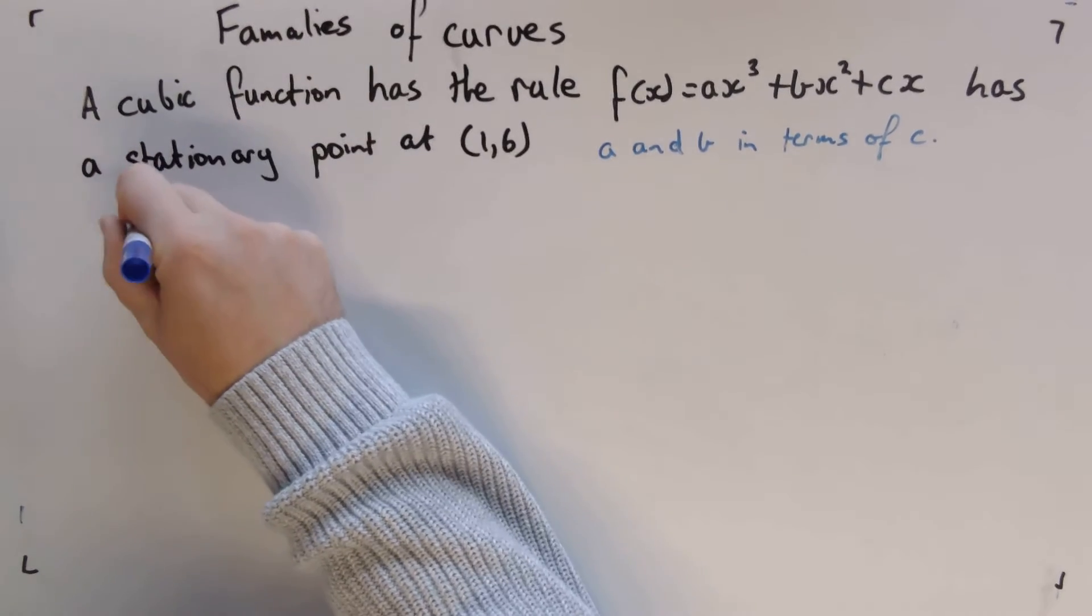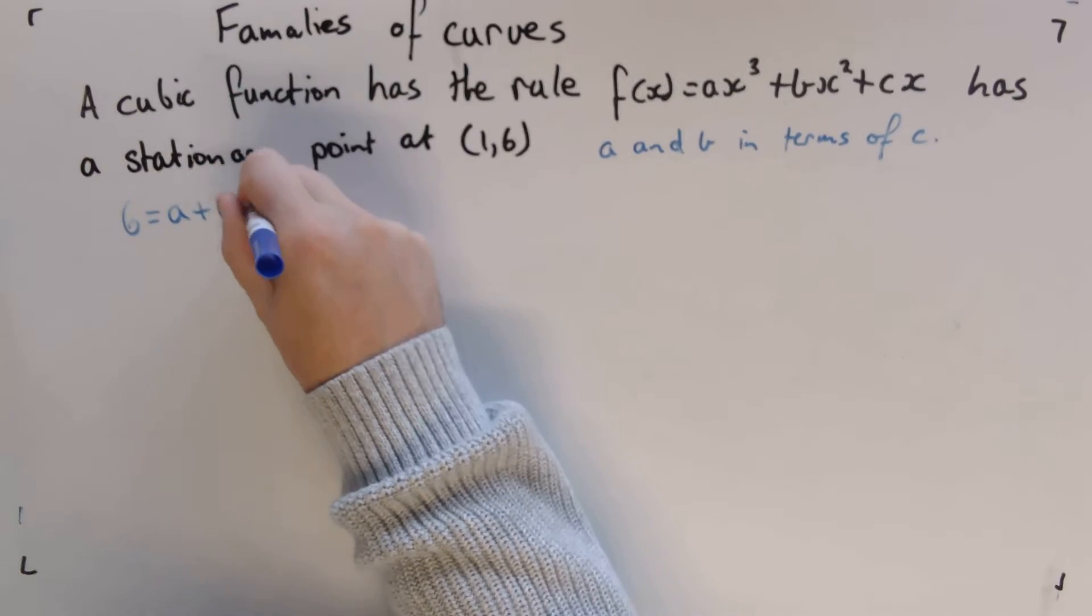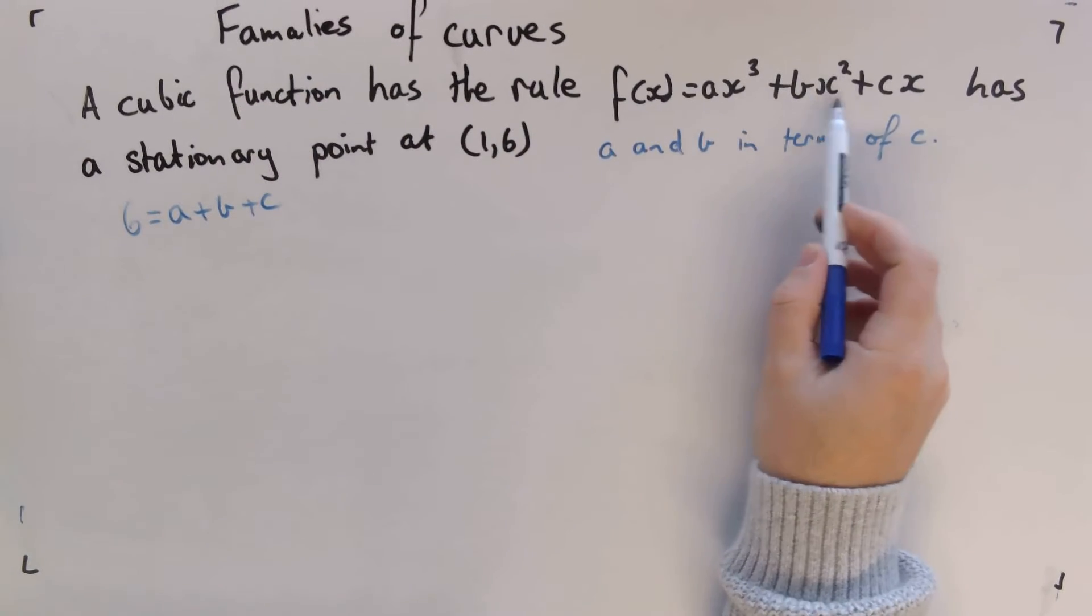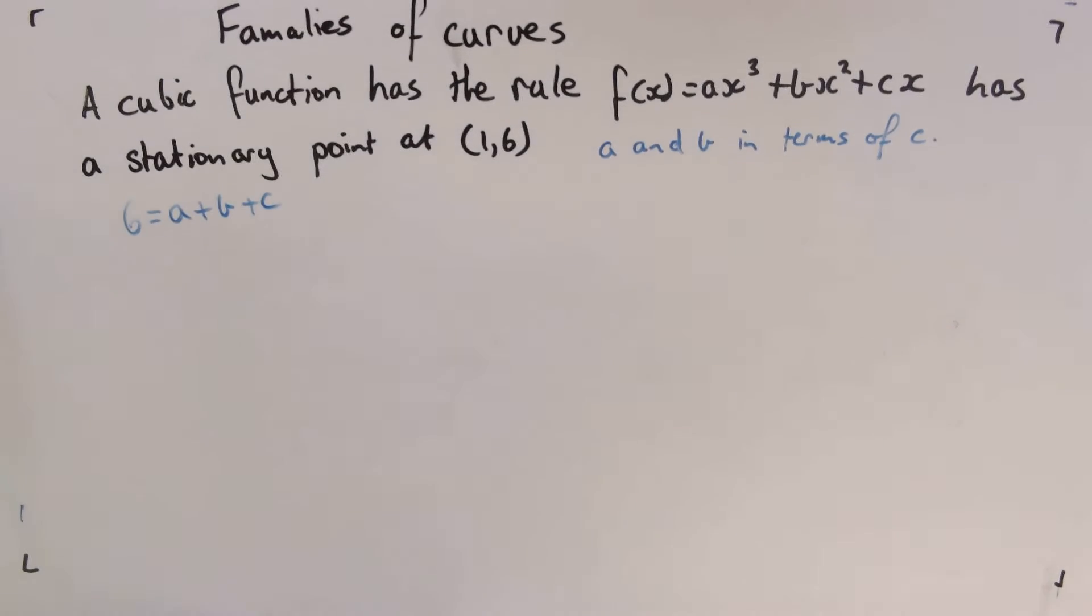We're going to say 6 = a + b + c. When I sub 1 in here, each one of those is just going to be 1, so we're going to get a + b + c.